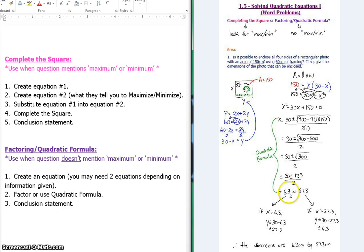If x is 6.3, that means my width is 6.3, which means my length must be 30 minus 6.3, which is 27.3. Or I could have another set of dimensions where x is the 27.3. So 30 minus 27.3 gives you a smaller dimension or a width of 6.3. In either case, your dimensions are 6.3 centimeters by 27.3 centimeters, and that's our conclusion statement.